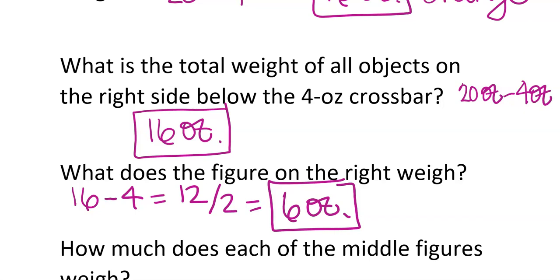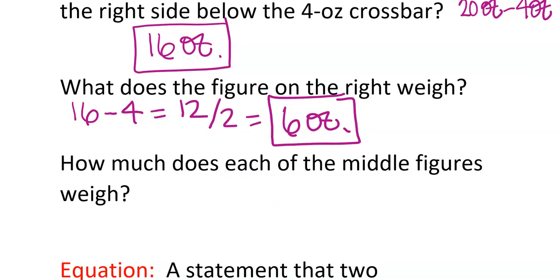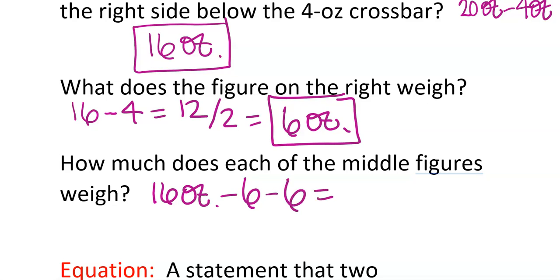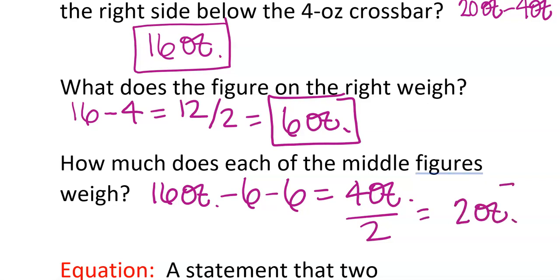How much does each of the middle figures weigh? If we have 6 on the right we're going to have 16 ounces; subtract 6 two times and we have 4 ounces left. Divide that by 2 between each of the two green ones and we get 2 ounces per shape. Basically you're working with two even sets of sides — keep dividing by 2, and also consider the inches are ounces as well.